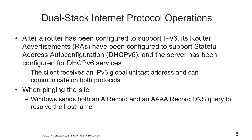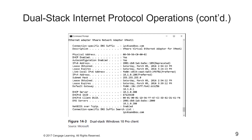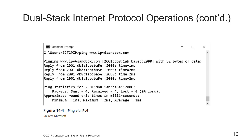After a router has been configured to support v6, its router advertisements have been configured to support stateful address auto-configuration — DHCPv6 — and the server has been configured for DHCPv6 services, so the client receives a v6 global unicast address and can communicate on both protocols. When pinging the site, Windows sends both an A record and an AAAA record DNS query to resolve the host name. Here's an example of a dual stack Windows 10 Professional client and running ping via v6.